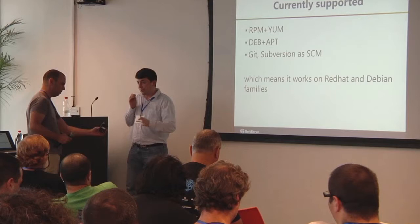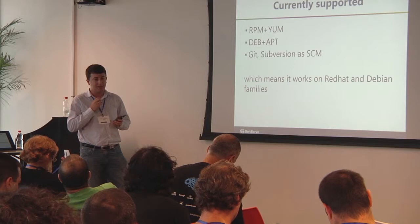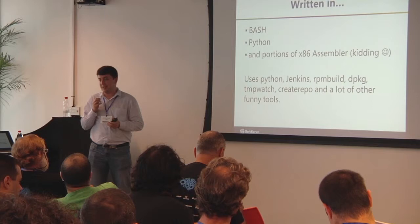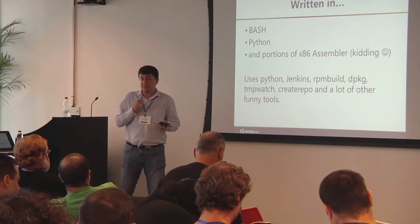We currently support YUM repository and RPM packages, as well as Debian and Aptitude. The source code can be pulled from Subversion, Git, or any other source control system, as well as any other packaging system — all because it's a plugin-based tool.